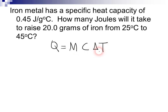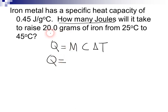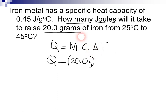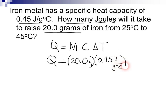We're just going to plug into this equation, and we may need a calculator for this as well. Q is measured in joules, and the question asks how many joules, so Q is our unknown — that's what we're going to solve for. M is the mass of the object, and it's 20.0 grams. C is the specific heat capacity, and its value is 0.45 joules per gram degree Celsius. And then we have delta T.